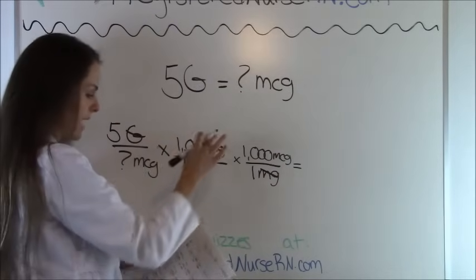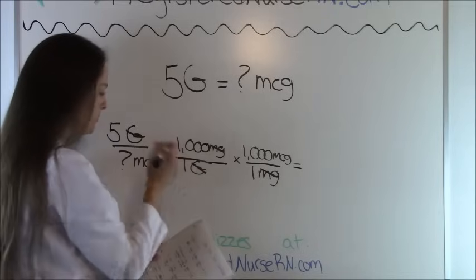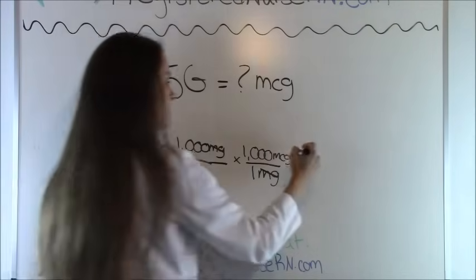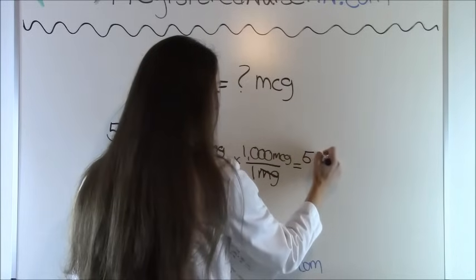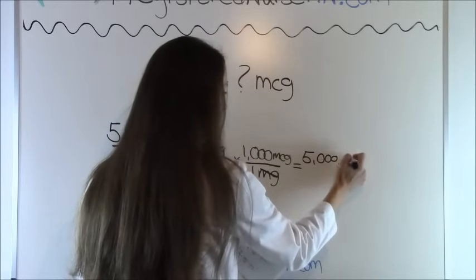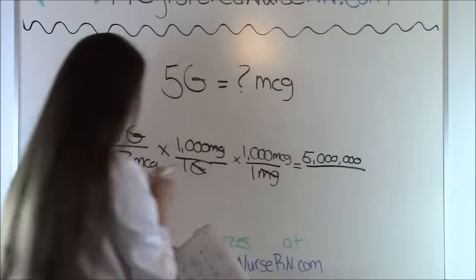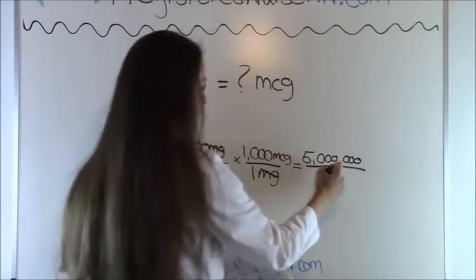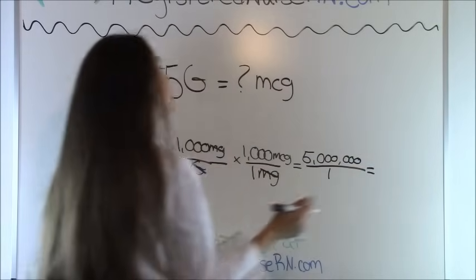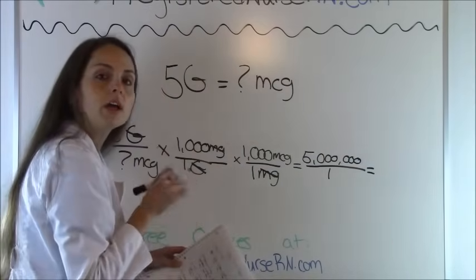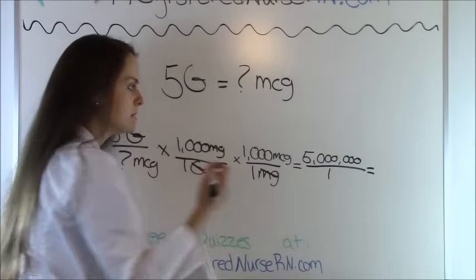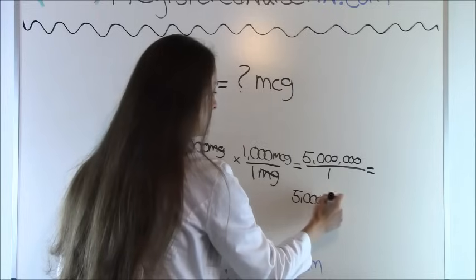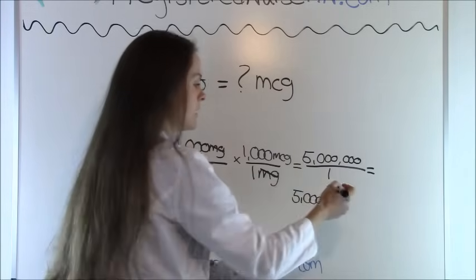We multiply everything on top: 5 times 1,000 times 1,000 equals 5,000,000. Multiply everything on the bottom: 1 times 1 is 1. When you divide 5,000,000 by 1, you get 5,000,000. So the answer is 5,000,000 micrograms.